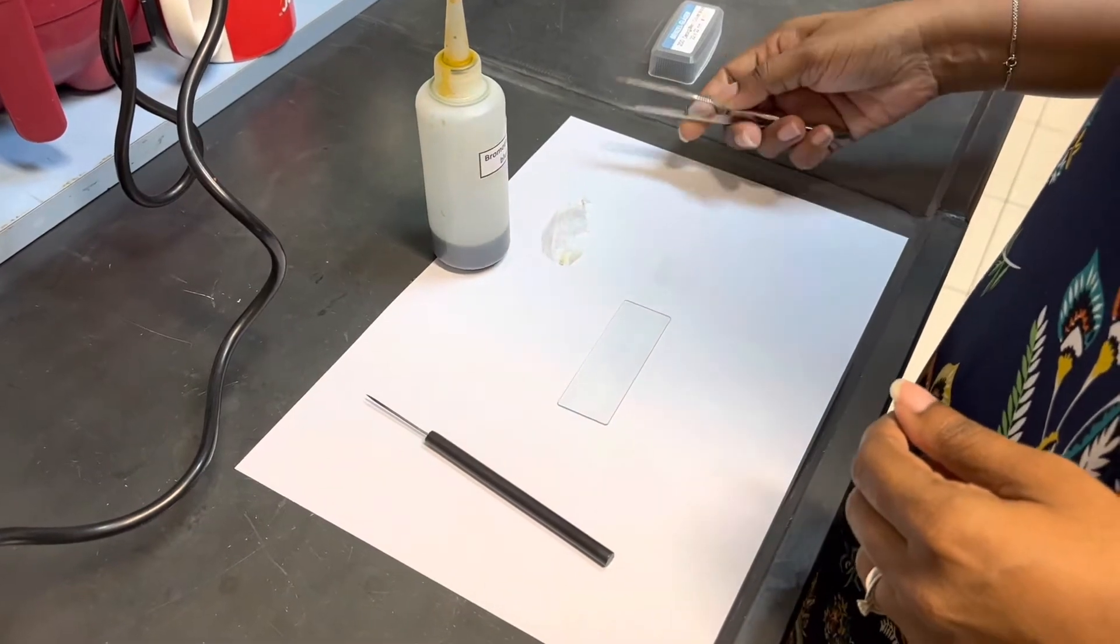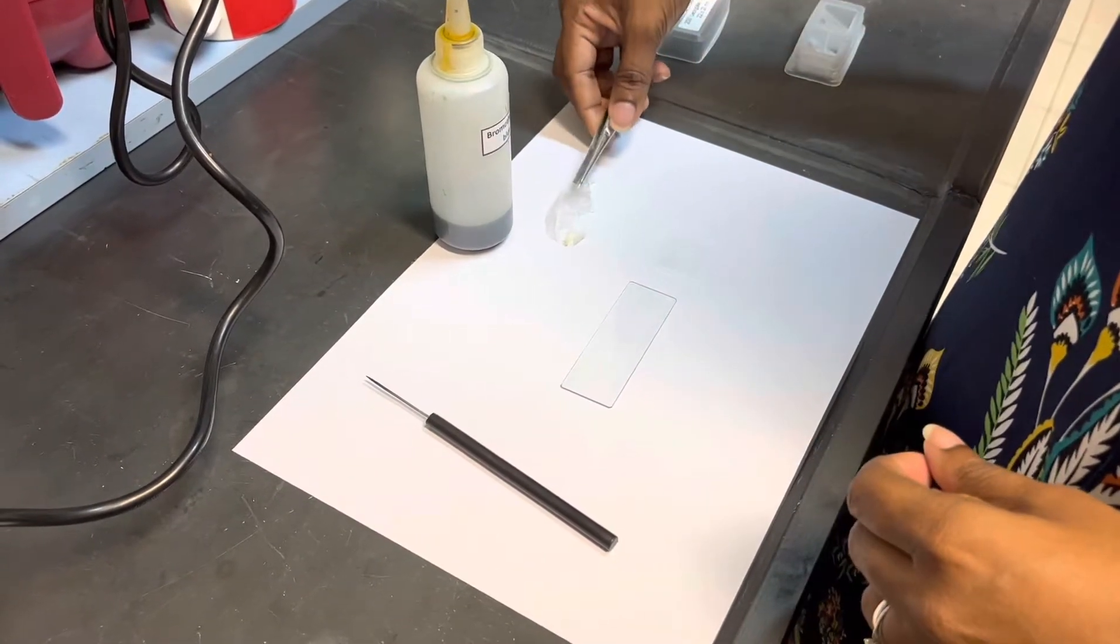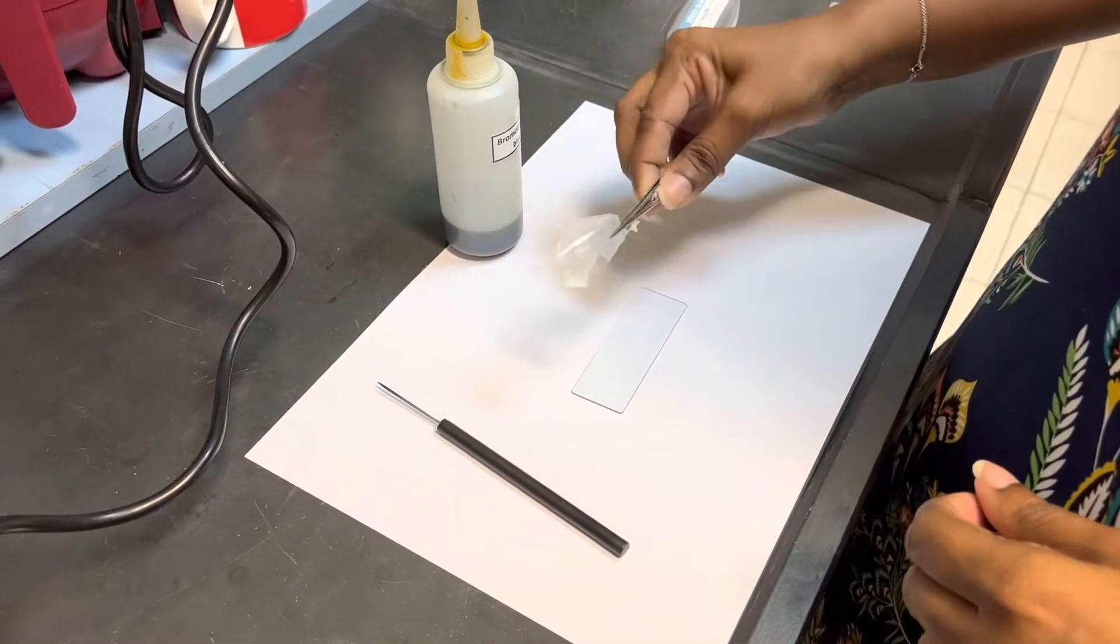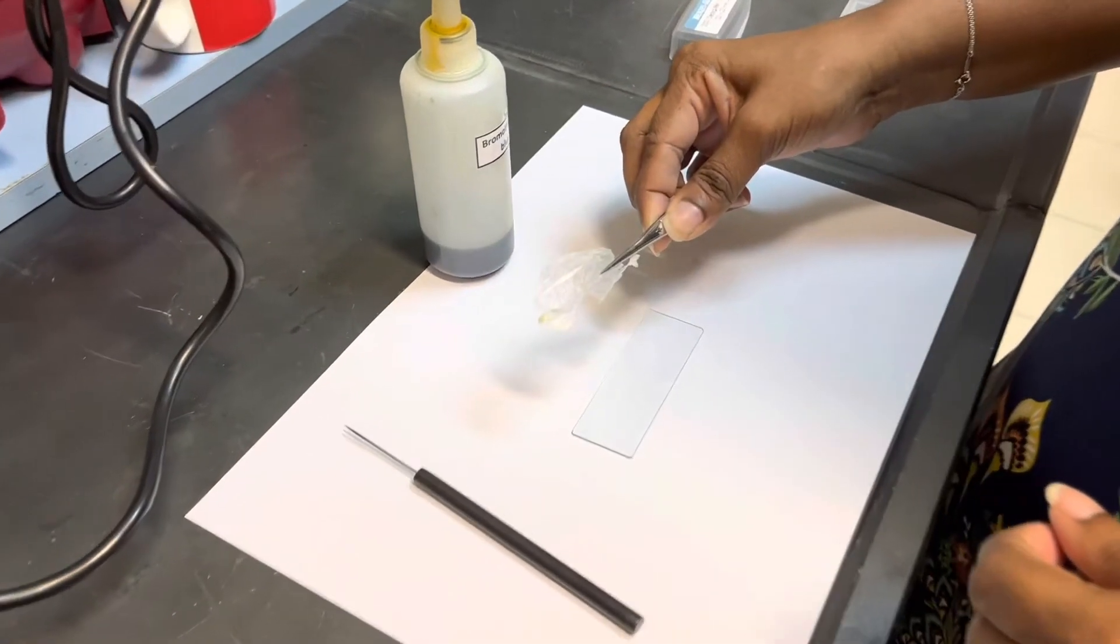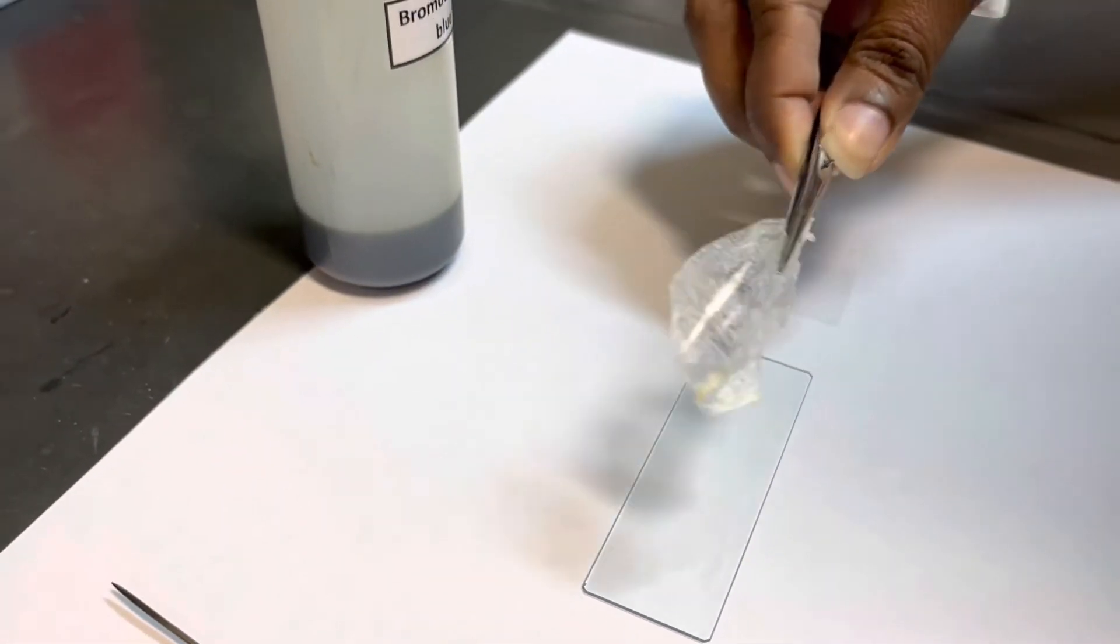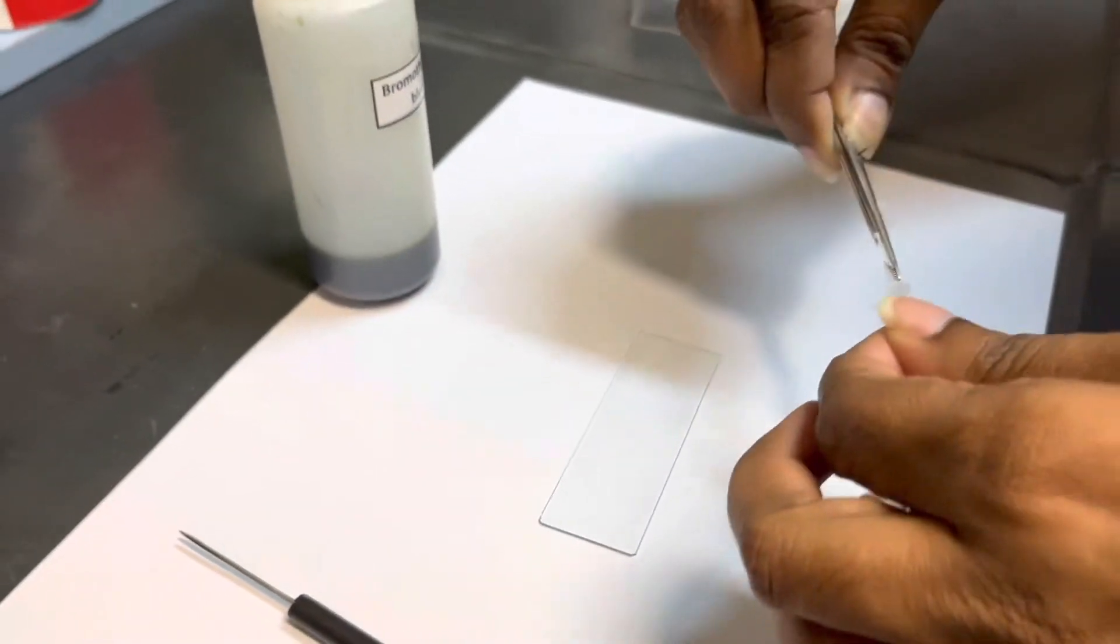Okay everyone, today we're going to be preparing a slide using onion skin. So you have to peel off a layer of onion skin like this, and then we can just peel off a smaller piece.